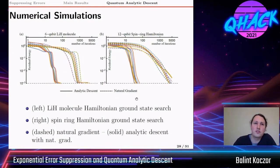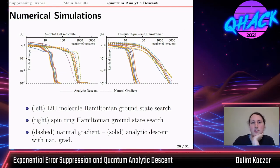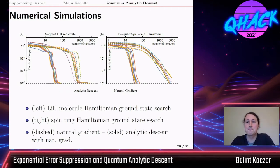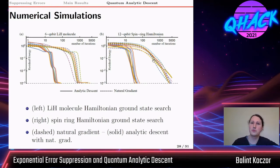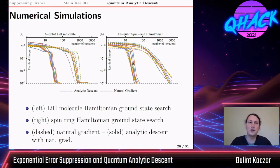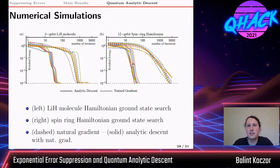In numerical simulations for typical VQE settings - including a lithium hydride molecule and a local spin Ising Hamiltonian - we compare quantum analytic descent to natural gradient evolution, one of the more sophisticated techniques guaranteeing improved convergence over simple gradient descent. Quantum analytic descent shows an even further improved convergence rate compared to natural gradients. More studies are needed to determine in which scenarios this approach works better than other optimization techniques, but the core idea is that in VQE the surface is very simple in its structure, so we should exploit this knowledge.